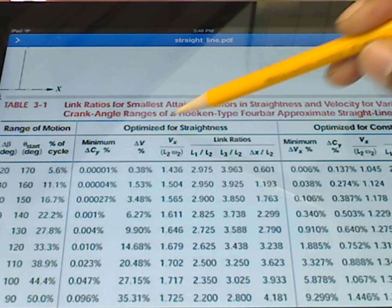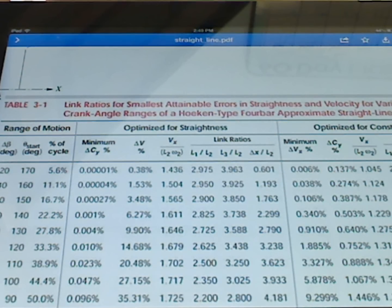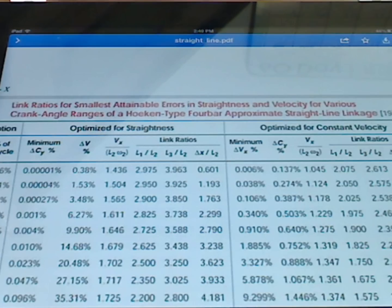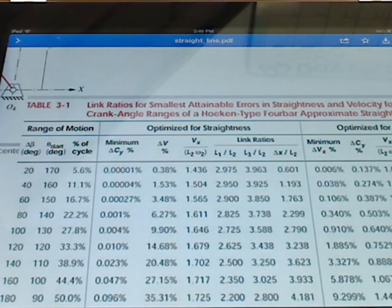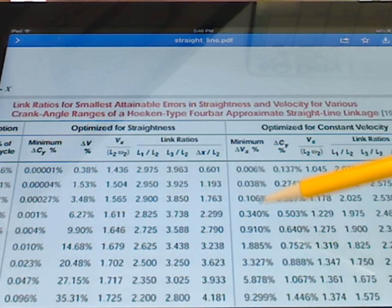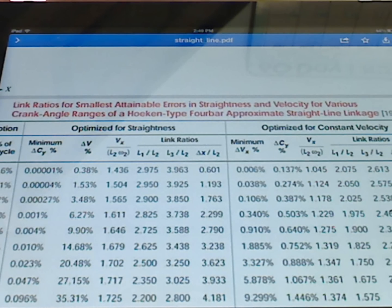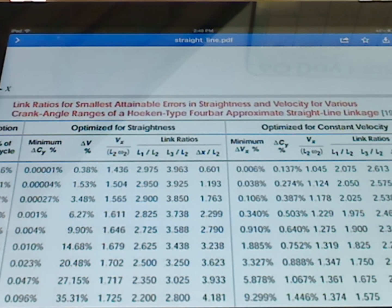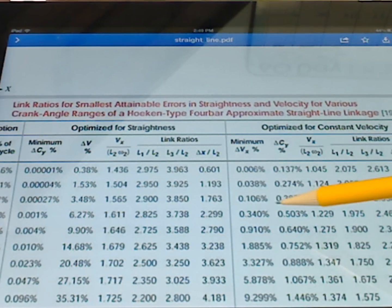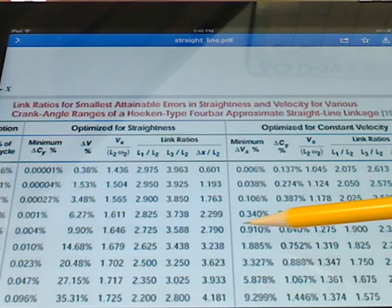Now, if instead we want to optimize not for straightness, but instead optimize for constant velocity, then that's a different set of values. So we're working on the fourth line down, so 1, 2, 3, 4, so we're working on this line. So these ratios are different if we're going to be optimized for constant velocity, in which case our error in velocity is going to be 0.34%.